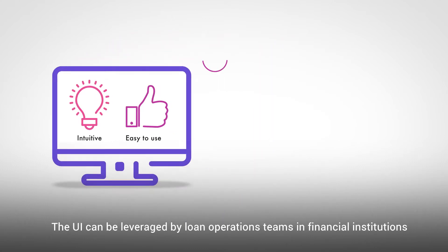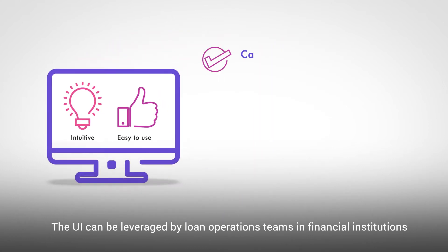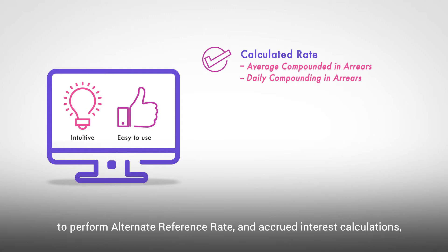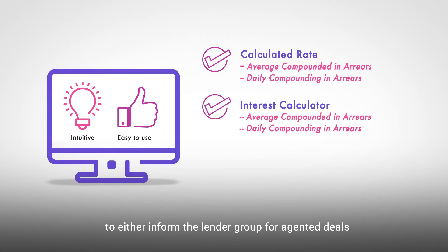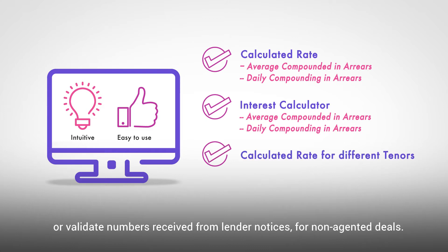The UI can be leveraged by loan operations teams and financial institutions to perform alternate reference rate and accrued interest calculations to either inform the lender group for agented deals, or validate numbers received from lender notices for non-agented deals.